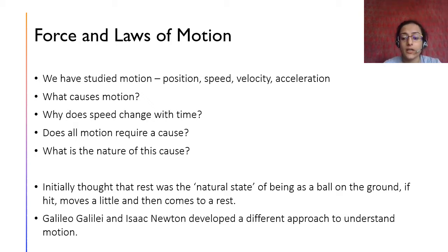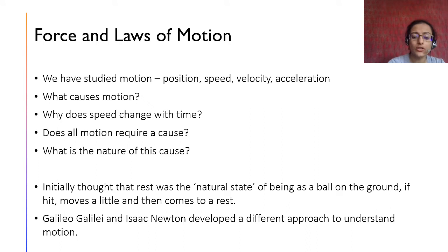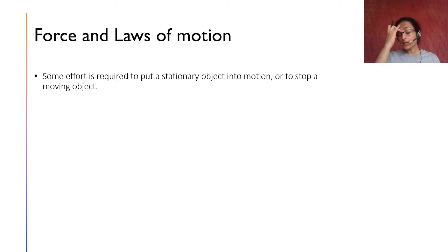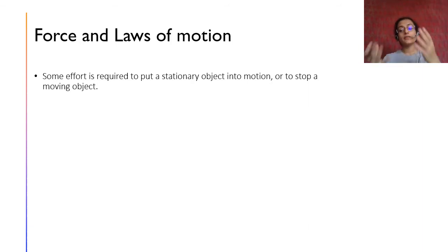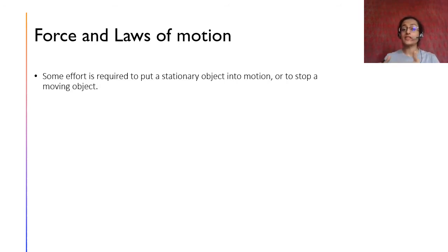But Galileo Galilei and Isaac Newton said that this is not the case. They developed a different approach to understand motion and said that the natural state of being is not rest. They said there is some amount of effort required to put an object at rest into motion, or if an object is already moving, you need to put some effort to stop it. There is no concept of a natural state.